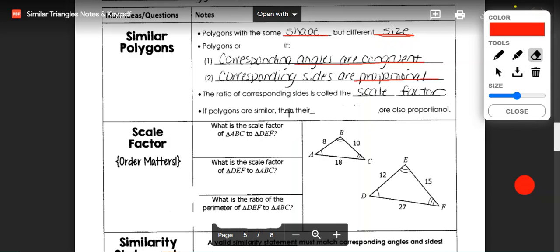If polygons are similar then the perimeters are also proportional. That's an important thing to keep in mind as we're solving problems.